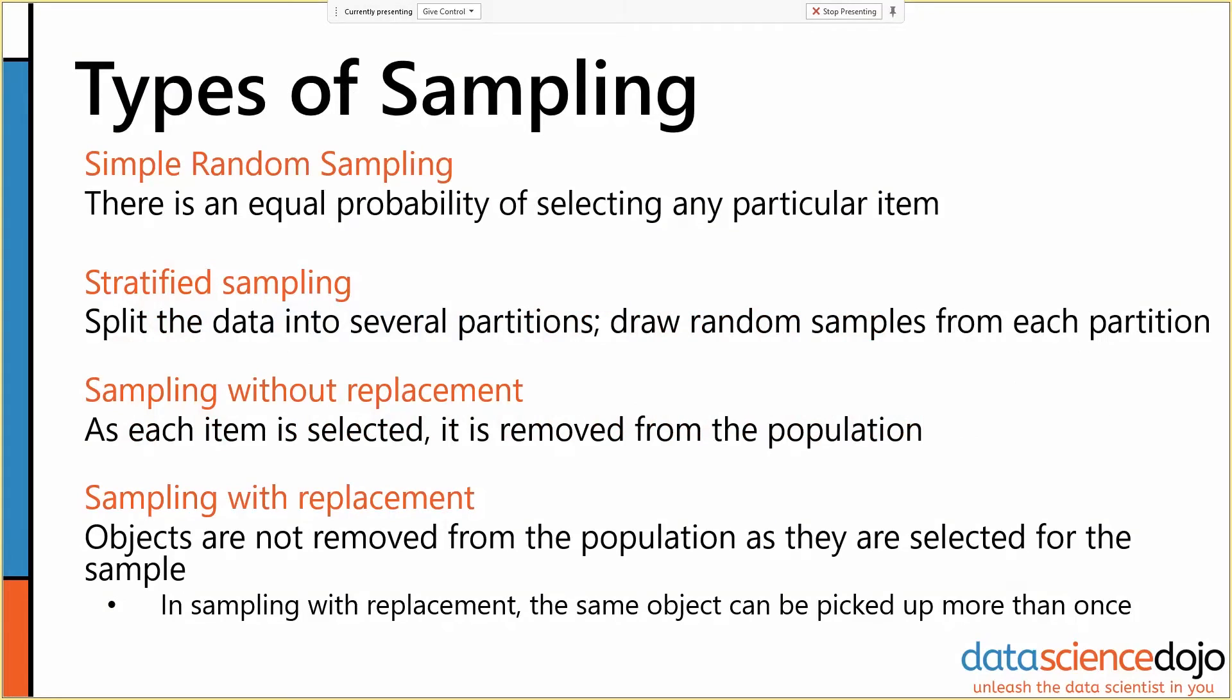There are several different types of sampling that are important, that will come up as we talk about over the course of the boot camp. So there's simple random sampling, where there's an equal probability of selecting any particular item.